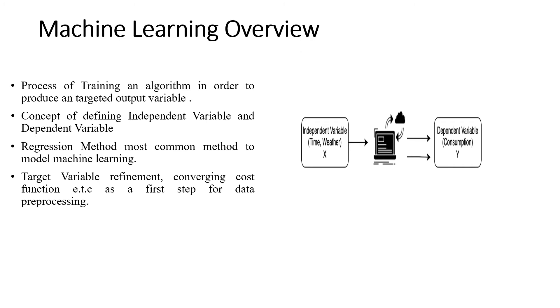So one of the topics that this project talks about is machine learning. So it is a process of training an algorithm in order to produce a targeted output variable. Here we have set our output variable as the consumption and the input variable as the time and the weather. This input variable is defined as the independent variable because initially it is not dependent with the consumption directly. So this input variable is defined as the independent variable whereas the consumption variable is a dependent variable. It directly depends upon the input variable, like at which time of day the consumption is at some certain value, also what kind of weather at that instance of time the consumption is showing that pattern.